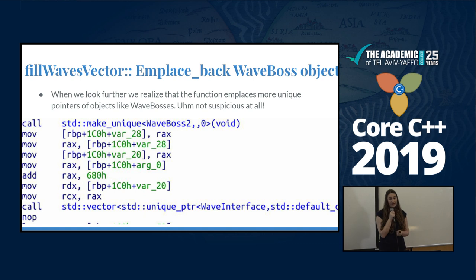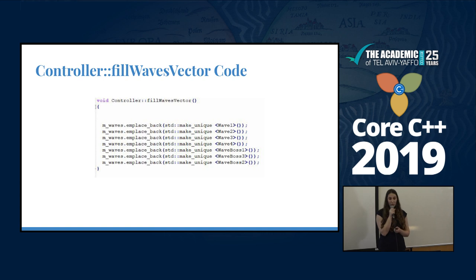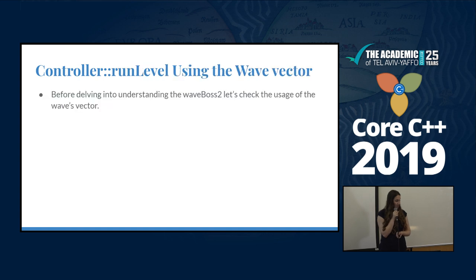After some reading in the code, we can see that there is something called 'wave boss two' — a unique pointer added to the vector. This makes us wonder, because the name is similar to the bosses we wanted to change. The waves are actually when all the chickens come into the game and start shooting eggs at you — that's called a wave. After reversing the code, we have some kind of a vector that emplaces back objects of type waves, and now we want to understand how it uses these wave objects.